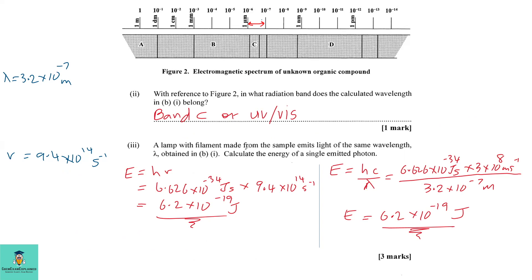Part 3: a lamp with a filament made from the sample emits light of the same wavelength obtained in B part 1. Calculate the energy of a singly emitted photon. Using the formula E equals Planck's constant times frequency: 6.626 times 10 to the minus 34 joule·seconds times 9.4 times 10 to the 14 per second gives us an energy of 6.2 times 10 to the minus 19 joules. Alternatively, using E equals Planck's constant times speed of light over wavelength gives the same answer of 6.2 times 10 to the minus 19 joules.